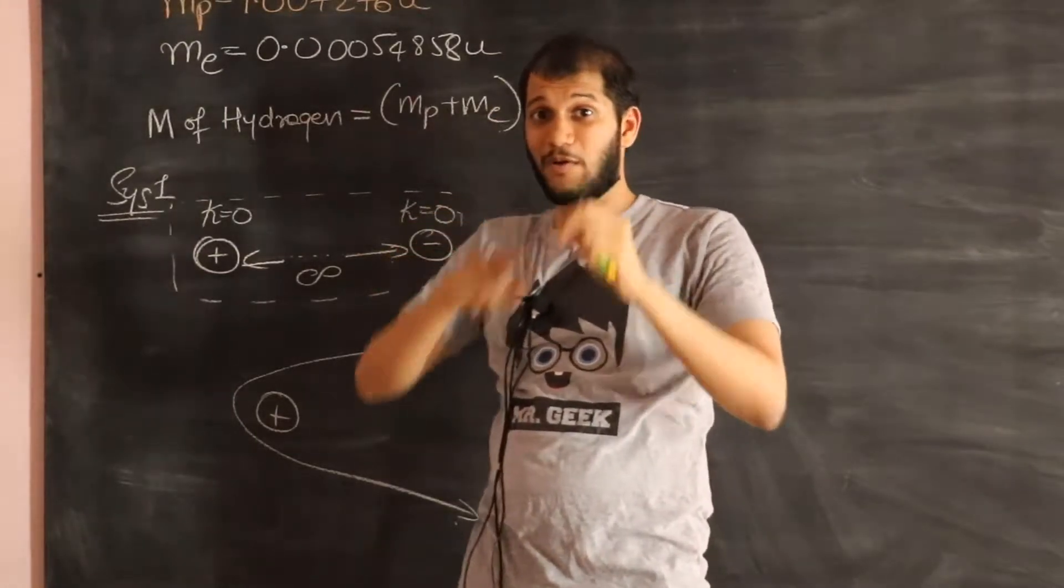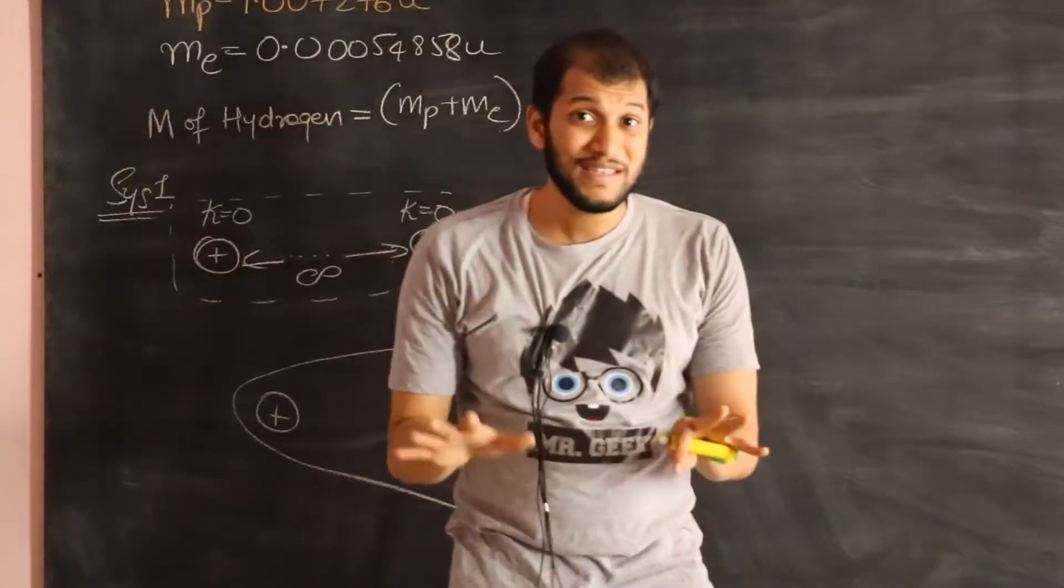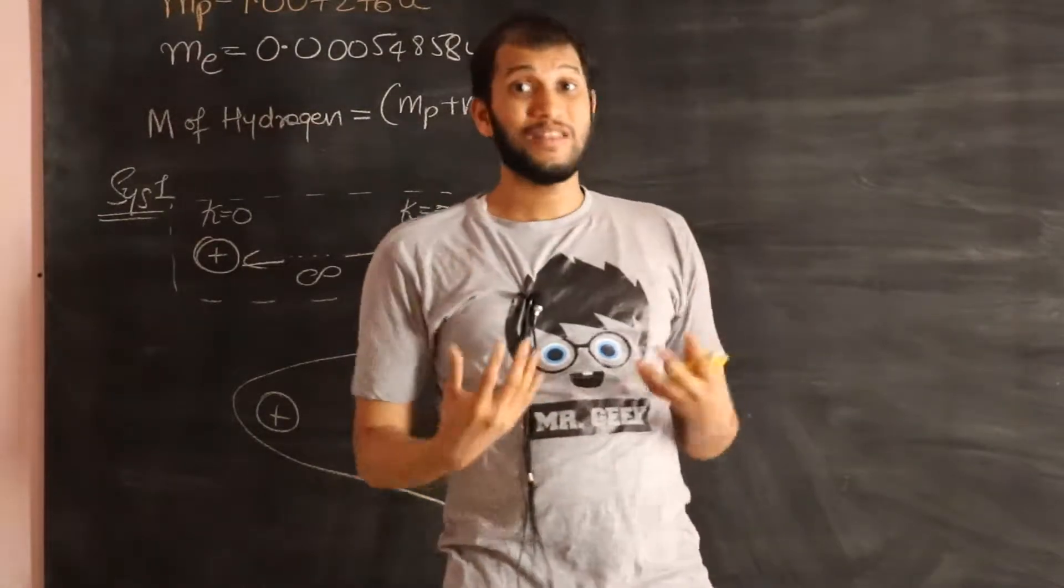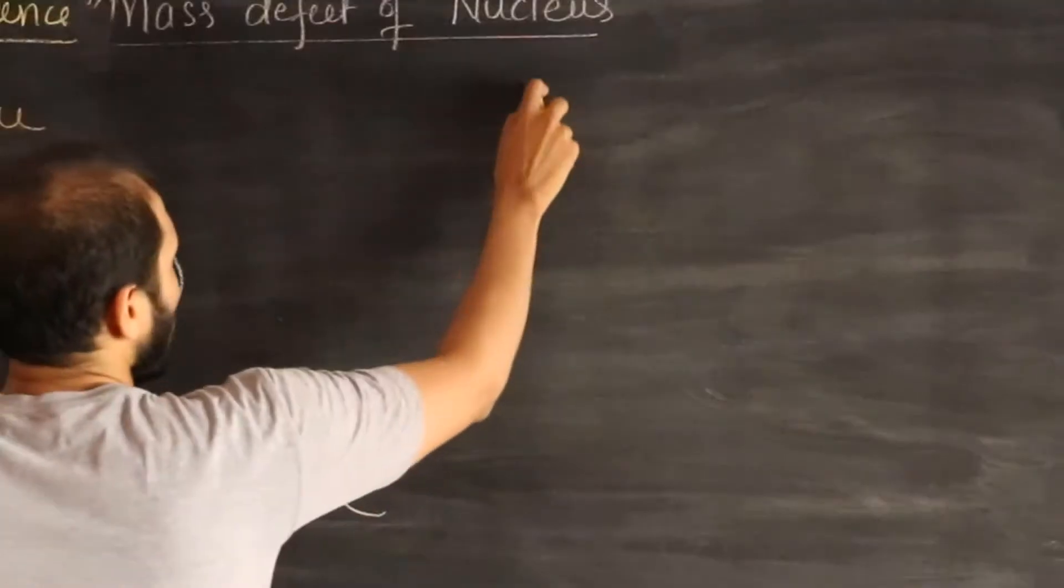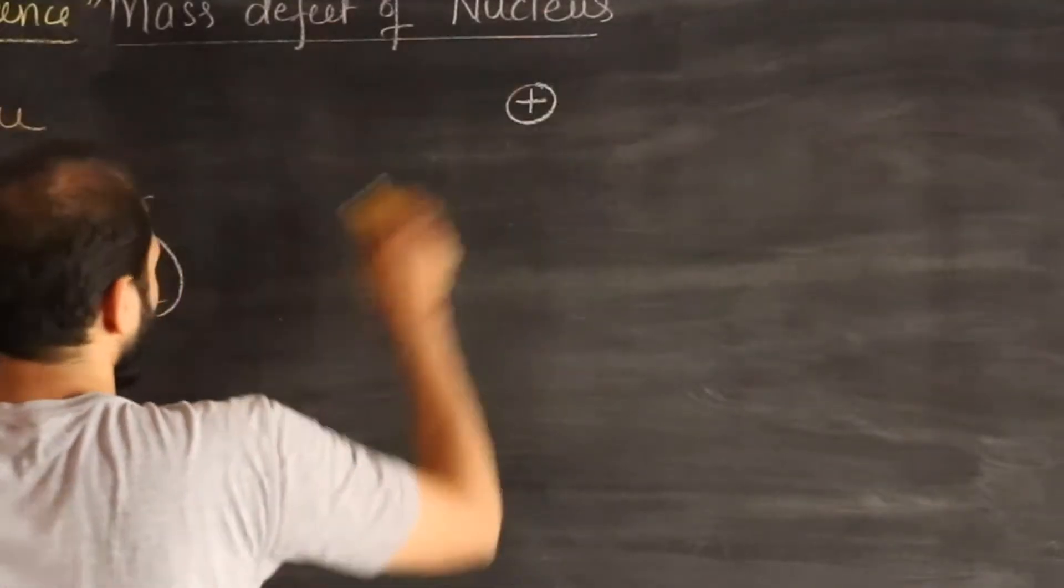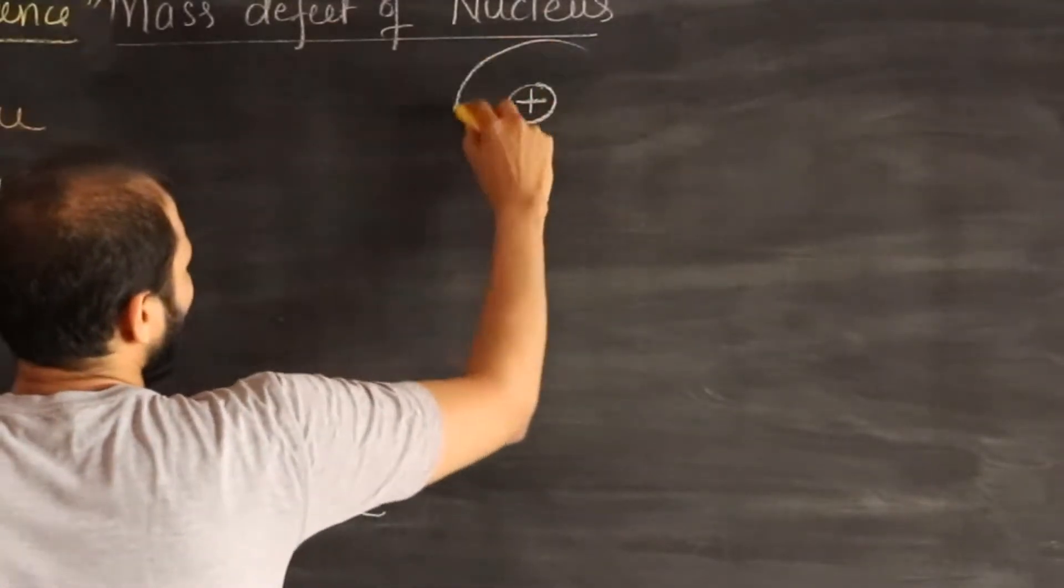Then it can orbit the proton. And if you have studied your Bohr's theory, then you must know the numbers. So when an atom is formed, a hydrogen atom is formed, so you have the proton and the electron.